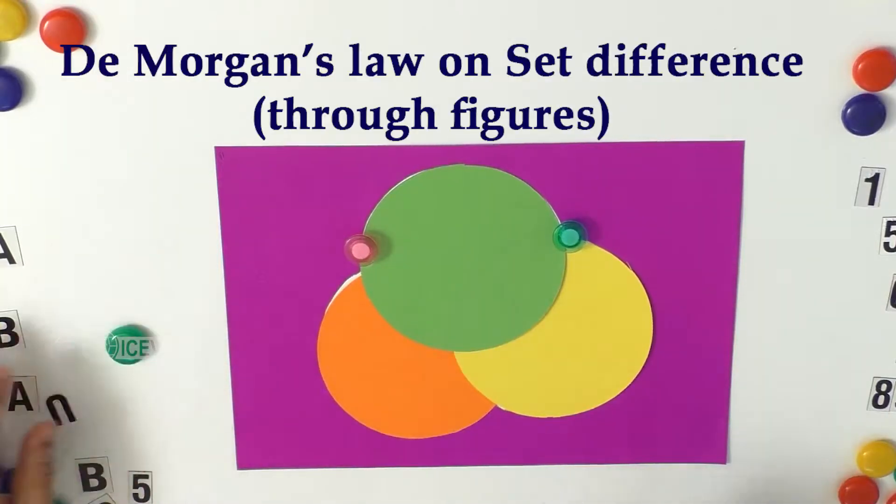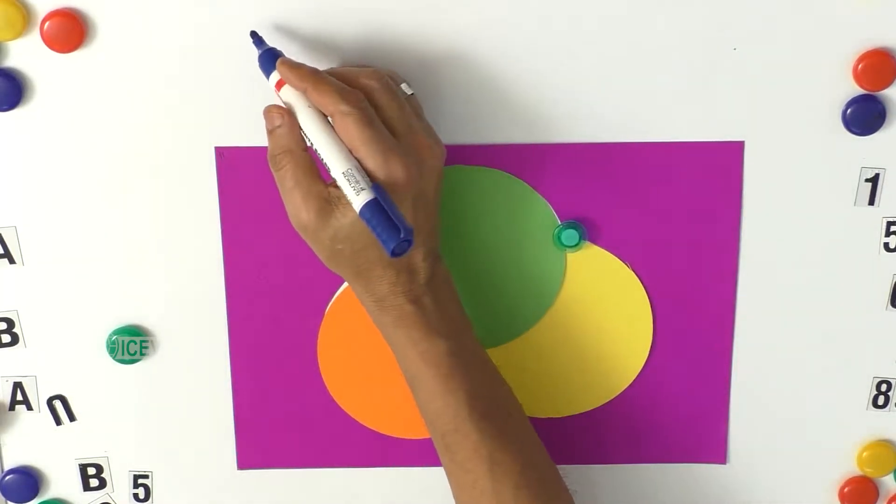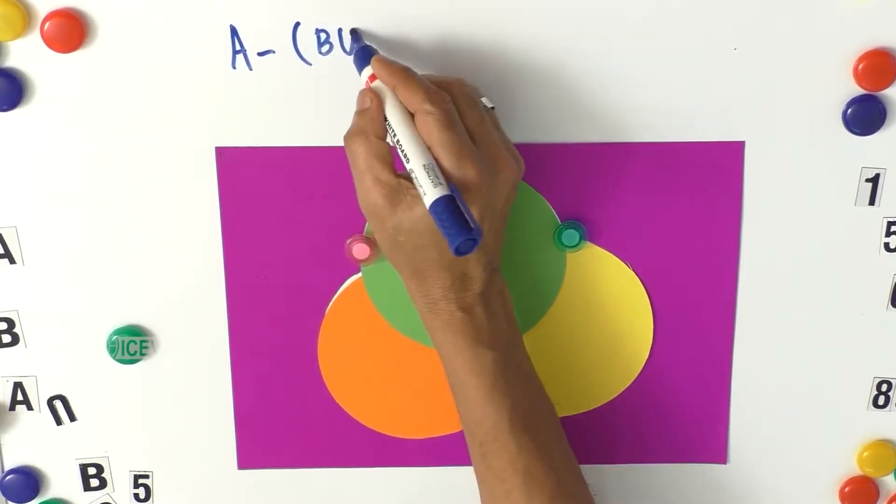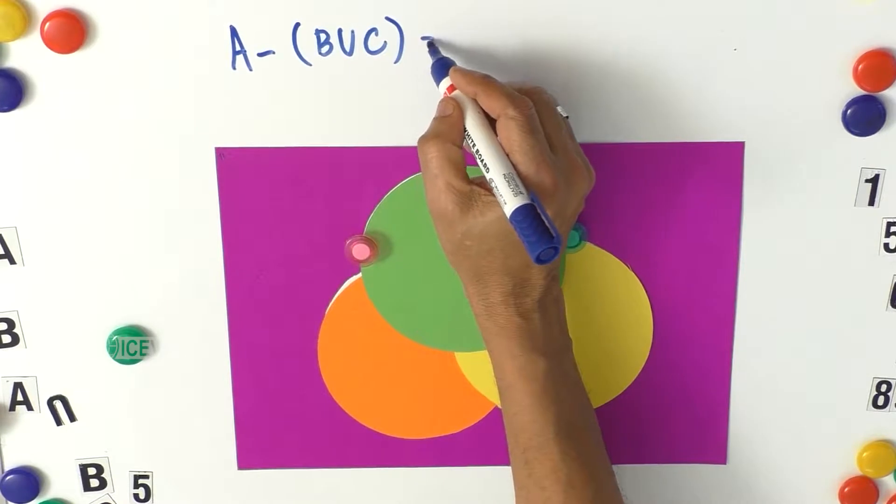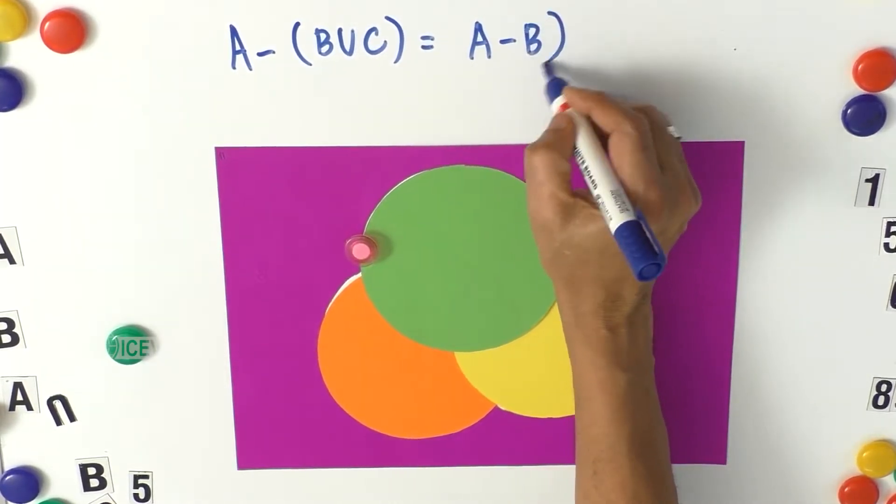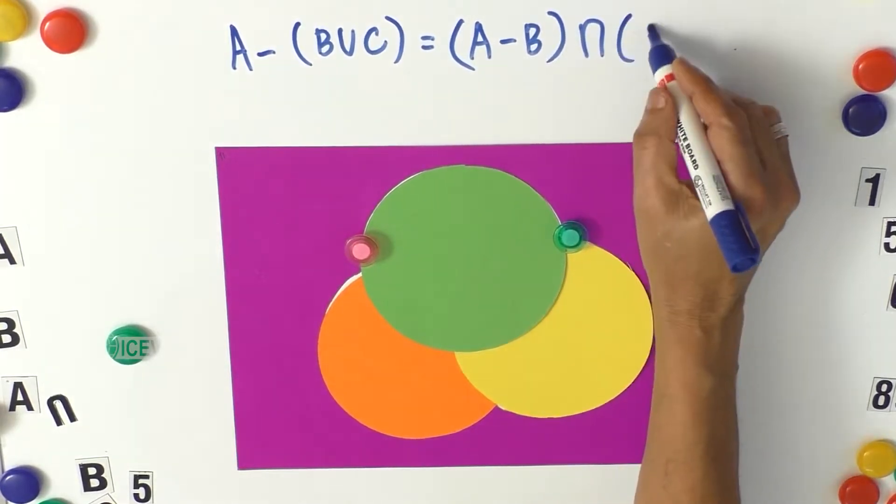Title of the video: De Morgan's Law on Set Difference. Now here, let us prove that A minus B union C equals A minus B intersection A minus C.